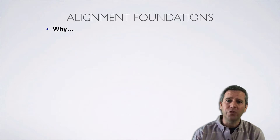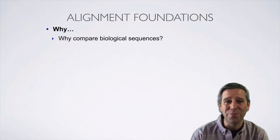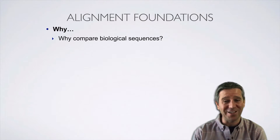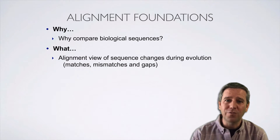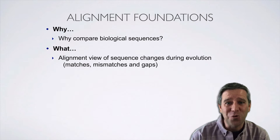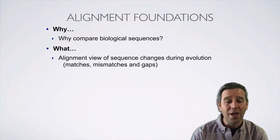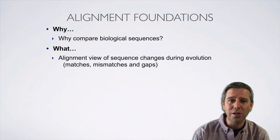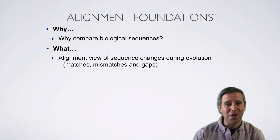We'll begin with the why — that is, why do we actually care about comparing biological sequences in the first place. For the what, it's useful to take a step back and consider what alignments are at their core trying to convey. For homologous sequences, where alignments are most useful, I'll show you how alignments are trying to capture and display in a succinct way the sequence of changes that happened during their descent from a common ancestor.